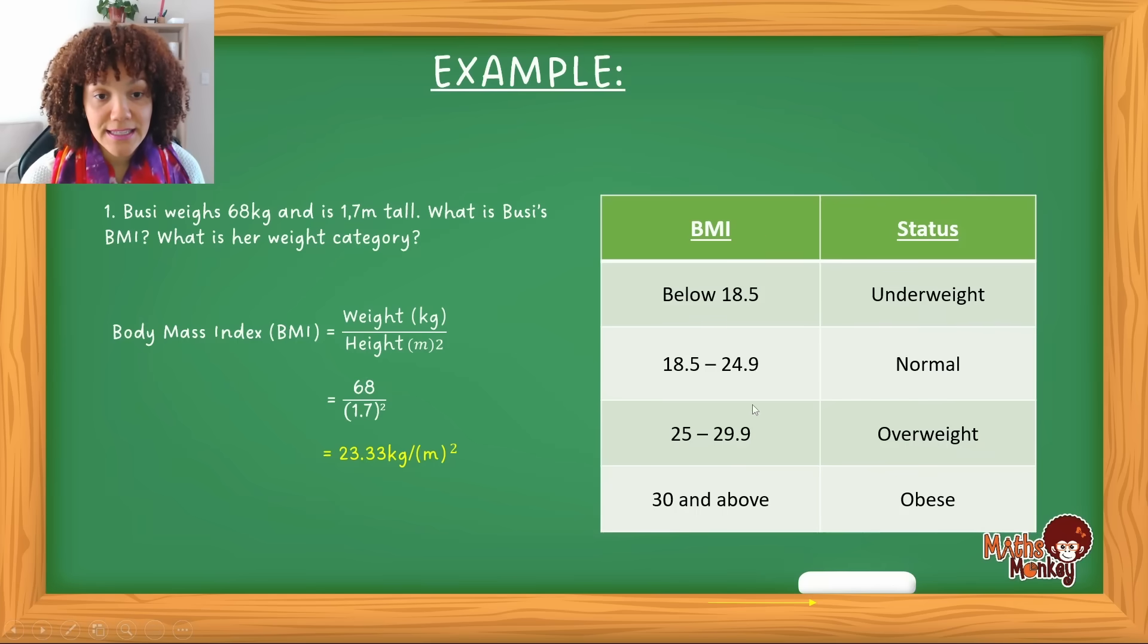So if I look in this range now, do you see that she falls in this range, the second one? So it's 23.33 kilograms per meter falls in this range, which means that her weight category is normal. So that means she is a healthy, normal weight for her height.